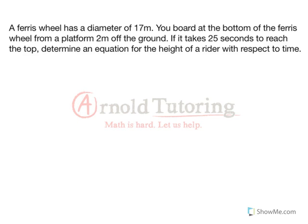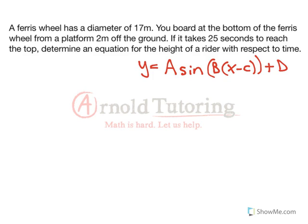I'm going to always start these by writing our general form of any trig equation. I'll put sine in here, but it can either be cosine or sine: y equals a times sine of b times (x minus c), plus d. The reason I like this general form is because we apply all of the transformations in alphabetical order. So 'a' is our vertical stretch, 'b' is our horizontal stretch, 'c' is our horizontal shift, and 'd' is our vertical shift. We have formulas to instantly identify a, b, and d — and then c is a little bit trickier.